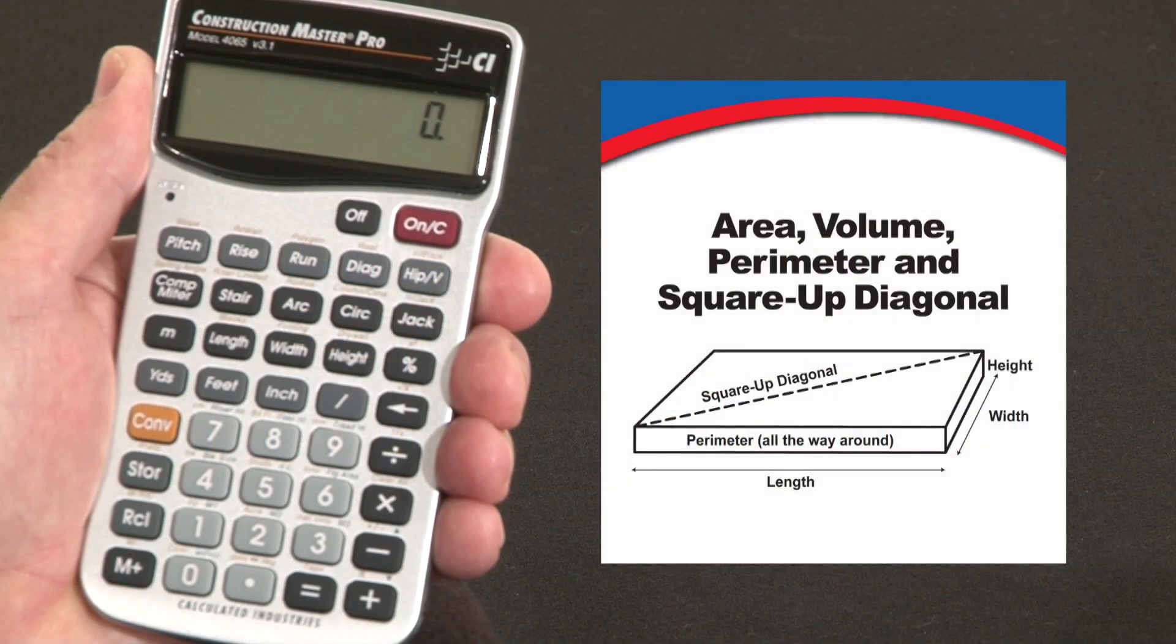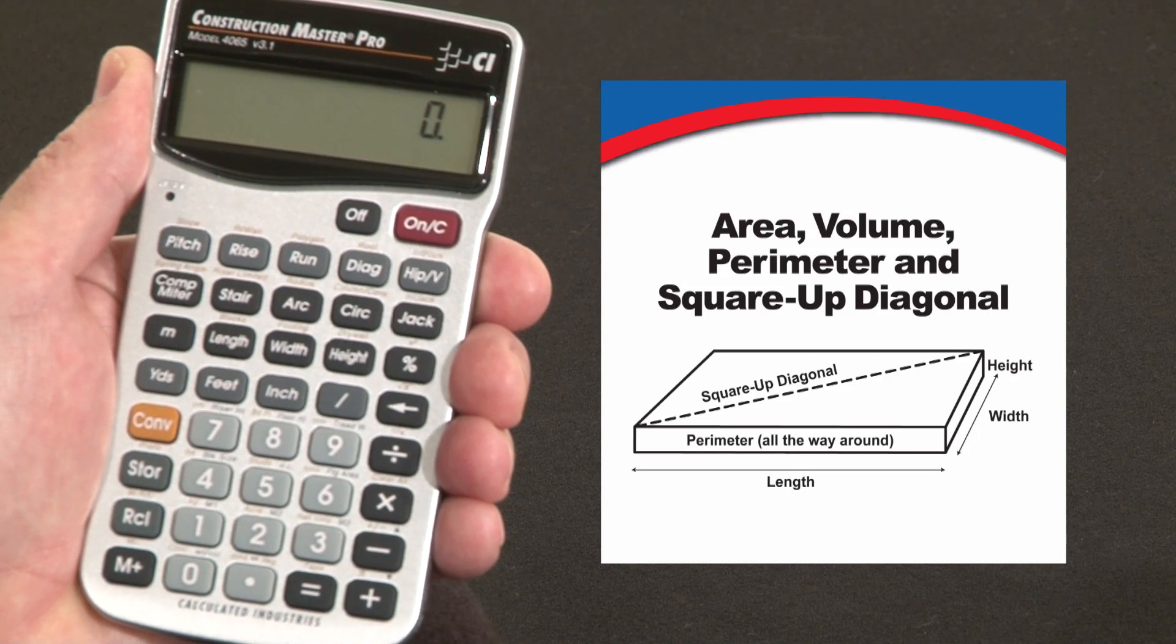Now let me show you how to calculate area, volume, perimeter, and square-up diagonals using the length, width, and height key.